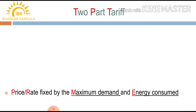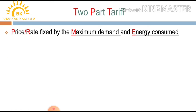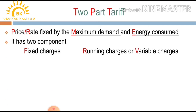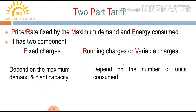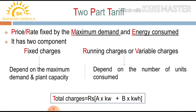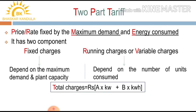In two-part tariff, the price or rate of electrical energy is fixed by the maximum demand and energy consumed. It has two components: fixed charges and running charges or variable charges. The fixed charges depend on the maximum demand and plant capacity, while the running charges depend on the number of units consumed.